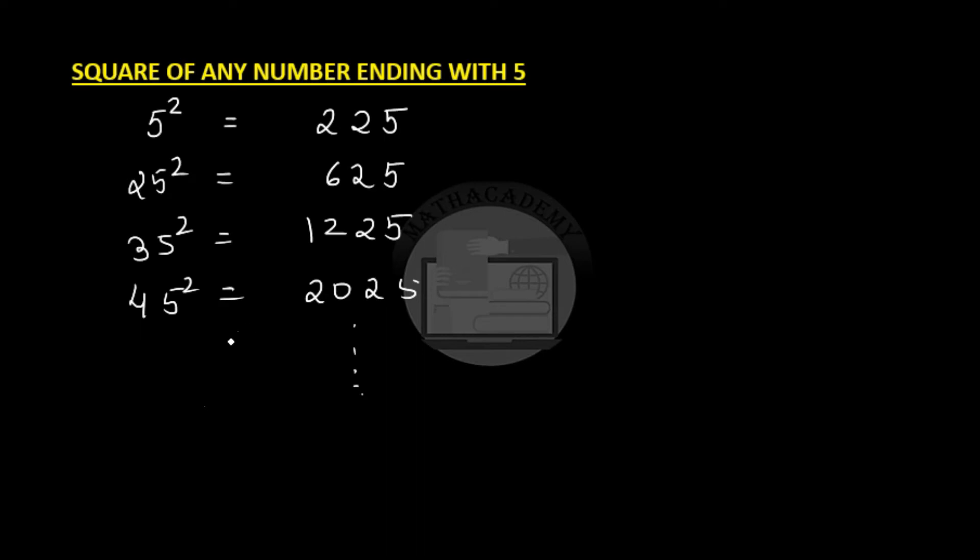What pattern do we observe here? If we are squaring any number ending in 5, then the last two digits of the square is always 25.